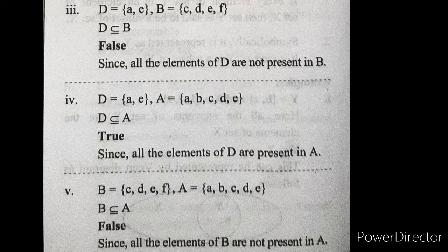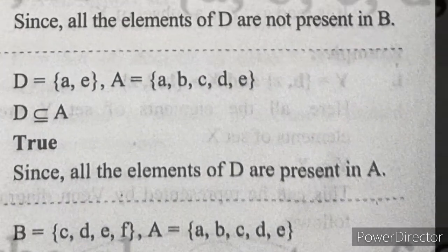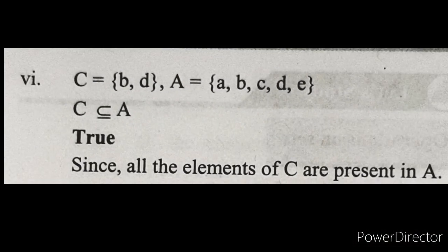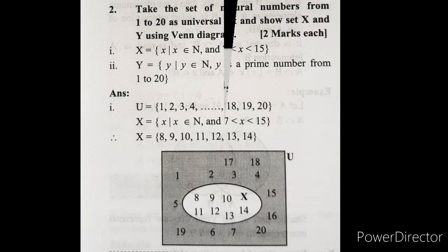Next: B is a subset of A — this is also false. Next: C is a subset of A — this is also true, because the elements of C are B and D, and both are present in set A. So this was question number 1.